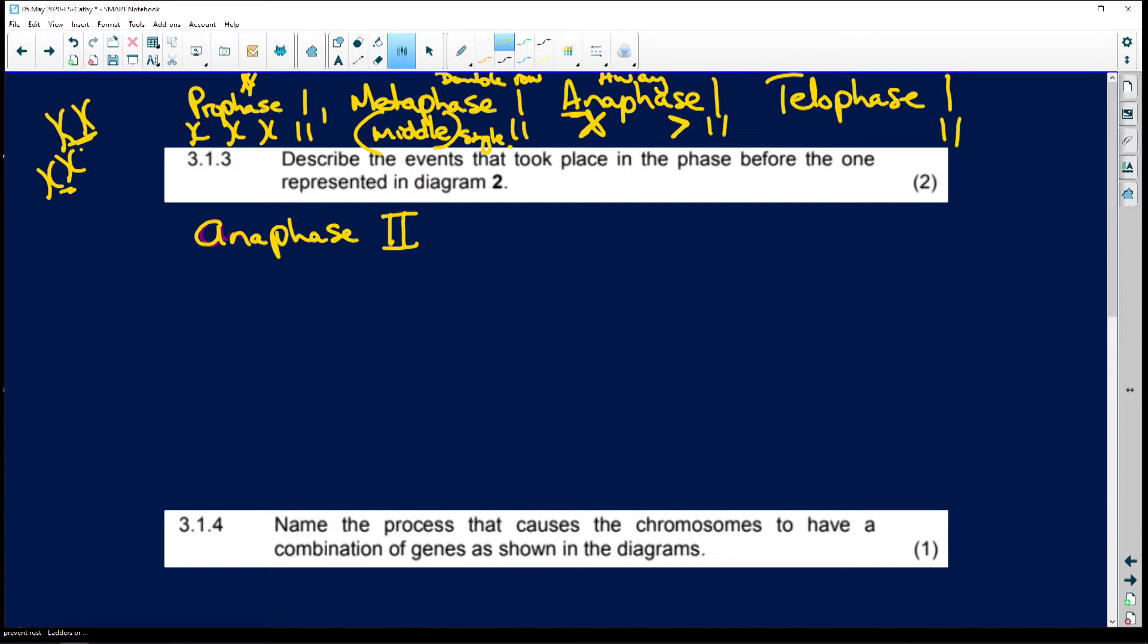Telophase one, you're going to have whole chromosomes in there. And in telophase two, remember T for tello, T for terminal, the end. Here you're going to have single chromosomes.